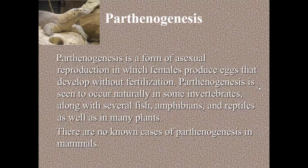Parthenogenesis — this one's very interesting. It's a form of asexual reproduction in which females produce eggs that develop without fertilization. Parthenogenesis is seen to occur naturally in some invertebrates, meaning animals that lack a backbone, along with several fish, amphibians, and reptiles, as well as in many plants, and no one knows why. There are no known cases of parthenogenesis in mammals. So here's what looks like a female Komodo dragon — or actually an Asian water monitor — that will just produce eggs without any male genes, and those eggs will develop on their own. It's not just limited to very small organisms; even creatures as large as this reptile can reproduce asexually.